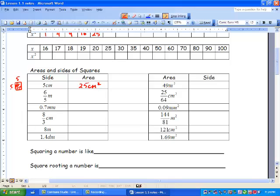Now, it's the same thing. We just multiply by itself. So we're going to multiply 6 over 5 by 6 over 5, which is 36 over 25 meters squared. Same thing with the decimal. That's like saying 0.7 times 0.7. So we know that 7 times 7 is 49, and we have a decimal in there. So it's 0.49 millimeters squared.